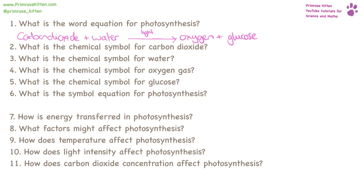What is the chemical symbol for carbon dioxide? CO₂ — with a subscript two. You have to have your numbers the right size and in the right place. What is the chemical symbol for water? H₂O. Oxygen gas? O₂. And glucose: C₆H₁₂O₆.